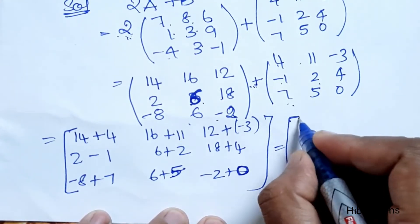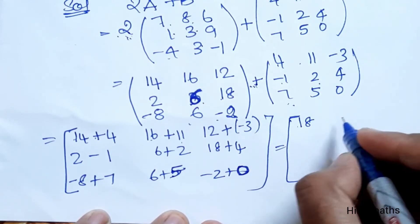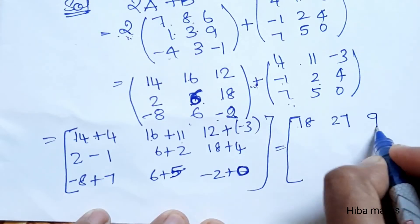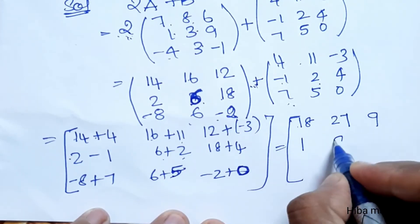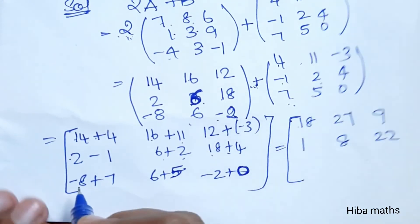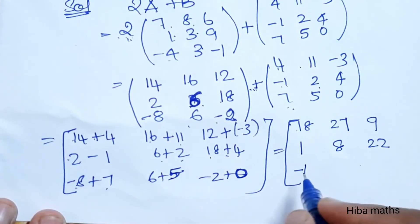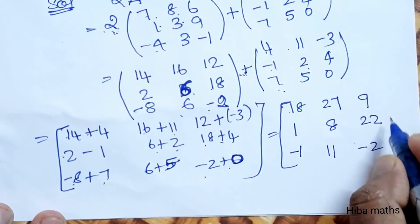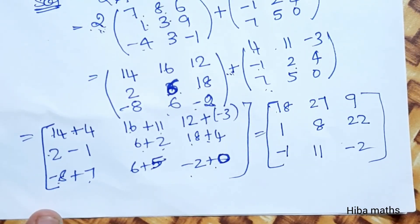Solving each: 14+4=18, 16+11=27, 12-3=9, 2-1=1, 6+2=8, 18+4=22, -8+7=-1, 6+5=11, -2+0=-2. So the required matrix 2A+B is [18,27,9,1,8,22,-1,11,-2]. Thank you so much for watching.